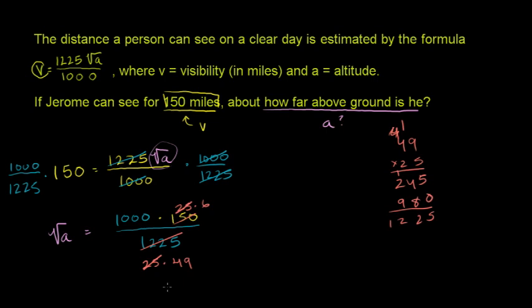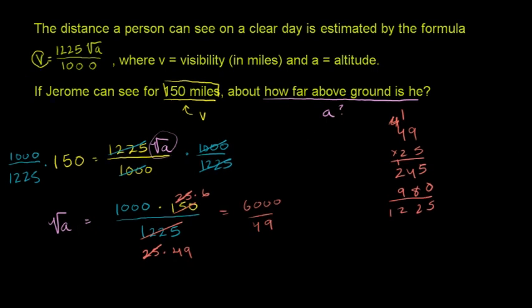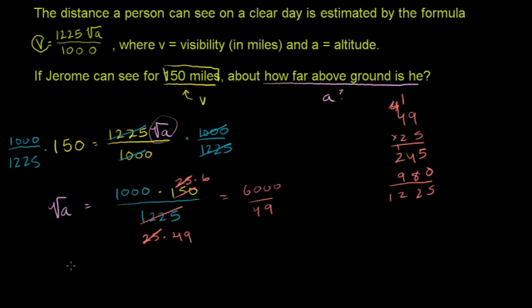And 49 is 7 times 7, so that looks about as simple as we can get it. So this is equal to, we could write it as 6000 over 49 is equal to the square root of a. So if we want to solve for a, we can square both sides of this equation.